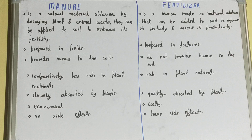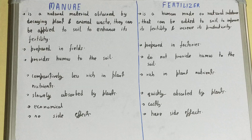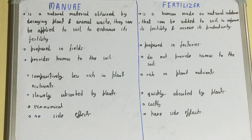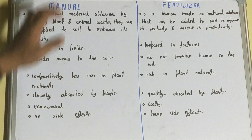Manure is slowly absorbed by a plant — it takes time for a plant to absorb manure. But fertilizer is quickly absorbed by the plant.